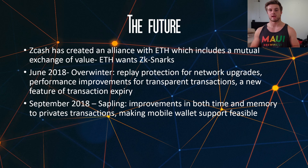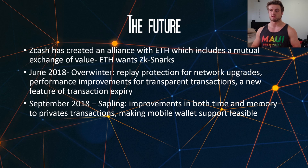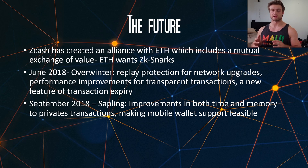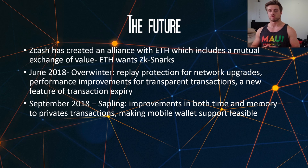In June 2018, we have an upgrade coming called Overwinter, and this is basically replay protection for network upgrades, performance improvements for transparent transactions, and a new feature of transaction expiry. Also, in September of this year, we have the upgrade to the network called Sapling. This is basically improvements in both time and memory for private transactions, as they're not yet very scalable, and it will also make mobile wallets more feasible.